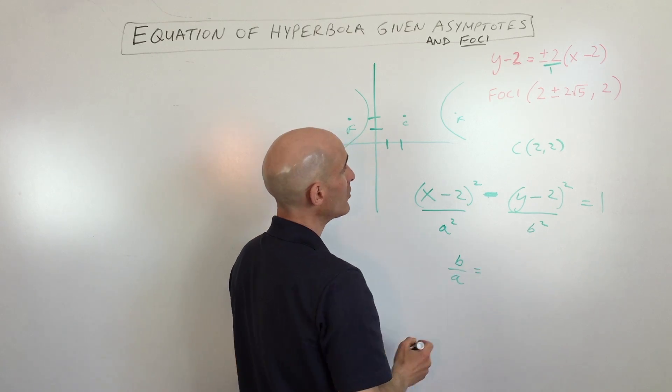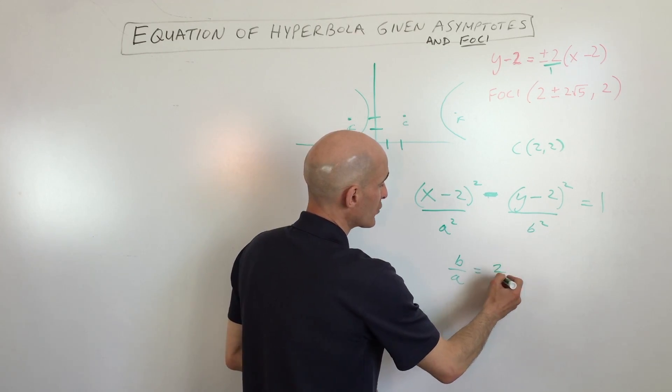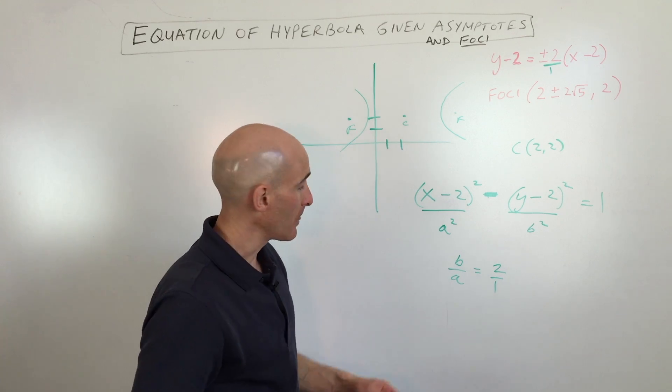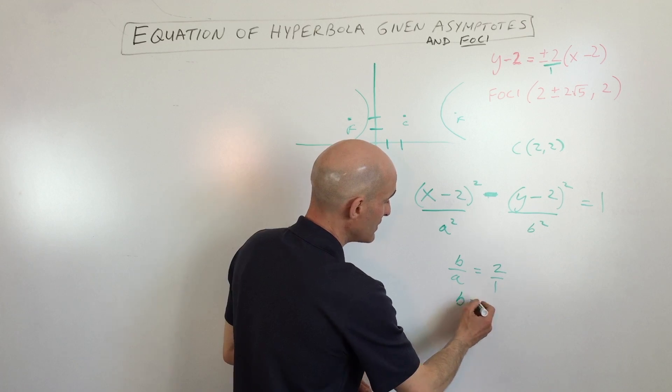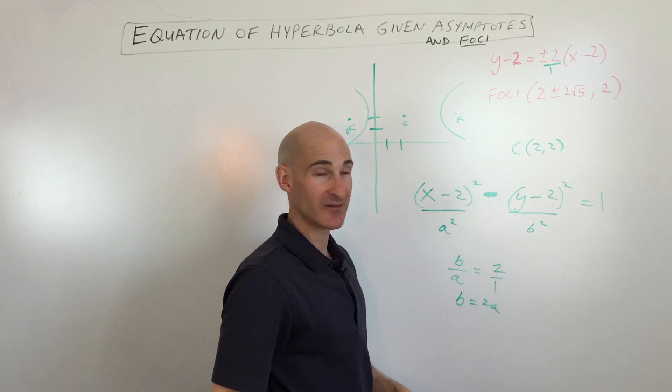We want to do b divided by a. b divided by a equals, we're just going to do 2 for right now. So if I solve for b by cross-multiplying, I get b equals 2a.